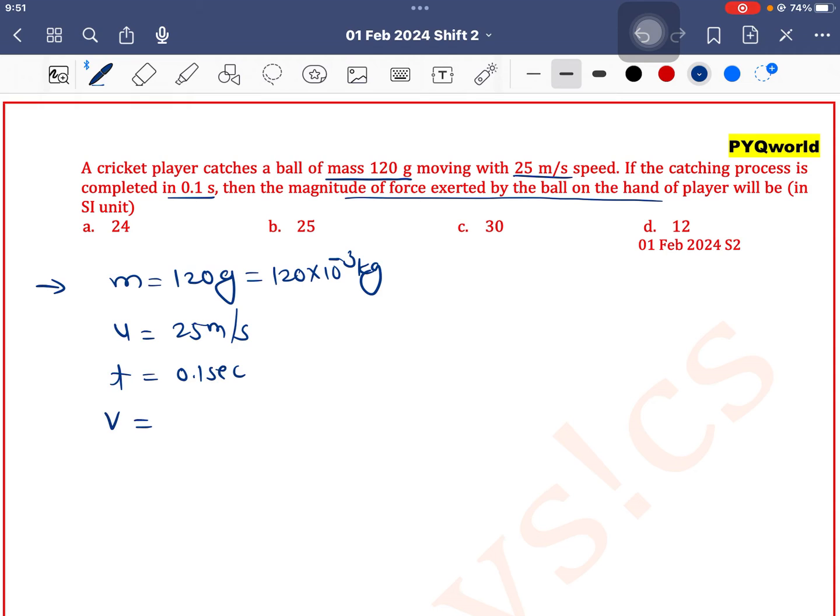So when we catch the ball, its final velocity is zero. So what is the formula for force? Force is equal to mass into acceleration, so mass into (final velocity minus initial velocity) by time.